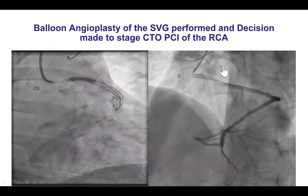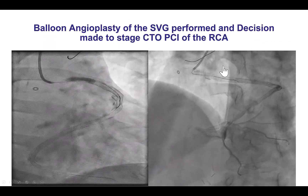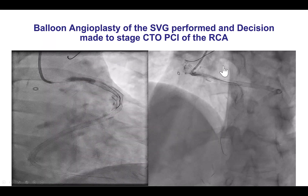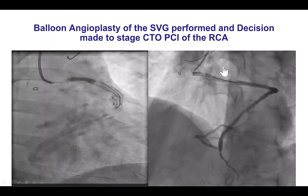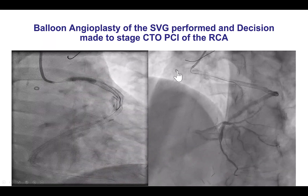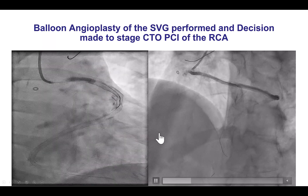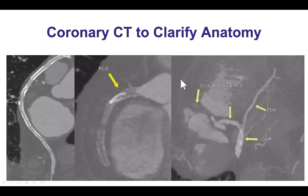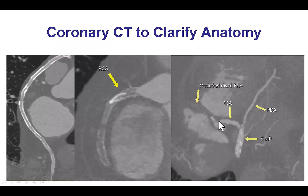At the time, a decision was made to perform balloon angioplasty of the SVG and refer the patient for staged PCI of the right coronary artery chronic total occlusion. Coronary CTA was performed that demonstrated an occlusion of the proximal right coronary artery — in-stent occlusion. There was significant calcification in the proximal portion of the occlusion, and then a diffusely diseased distal vessel.